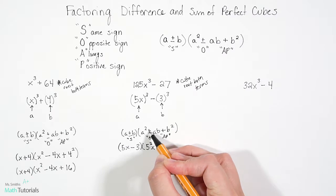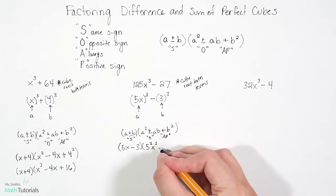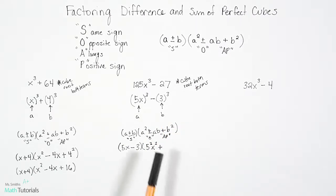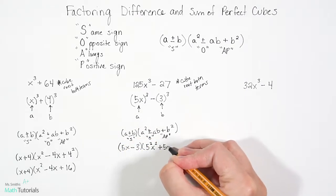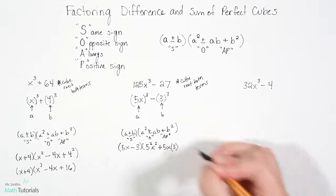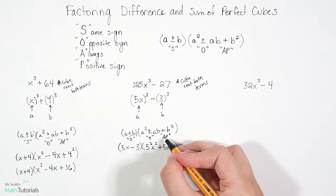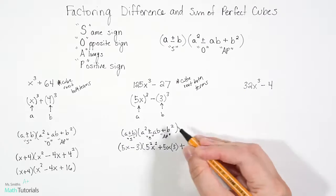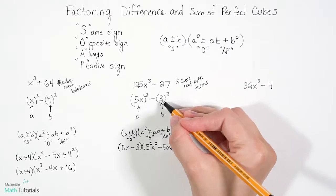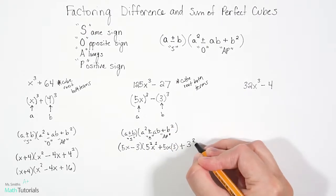Our o stands for opposite sign. So it was minus. Now it's going to be positive. a times b. So that'll be 5x times 3. We can write that like this. 5x times 3. Always positive sign. And then b². So 3².